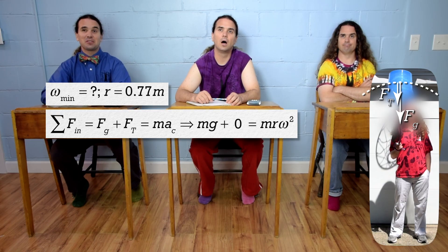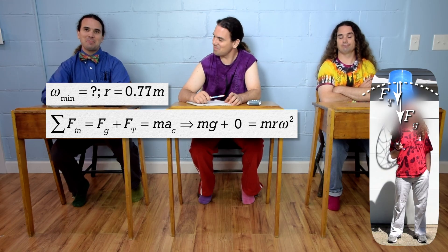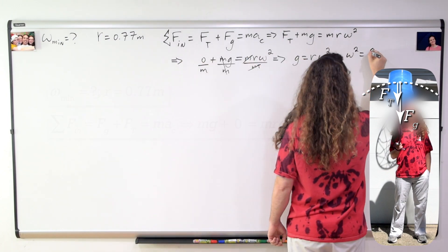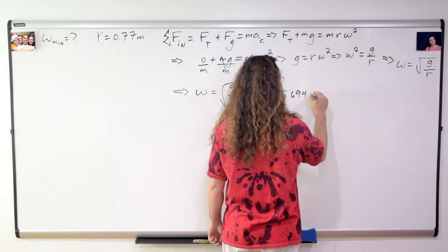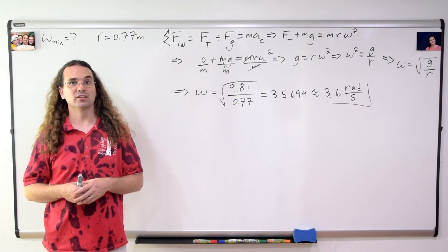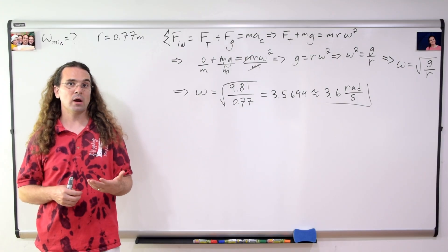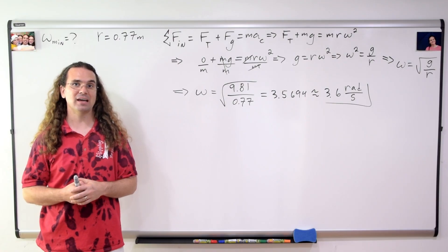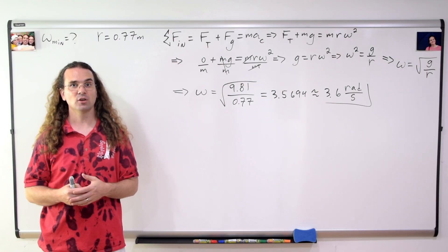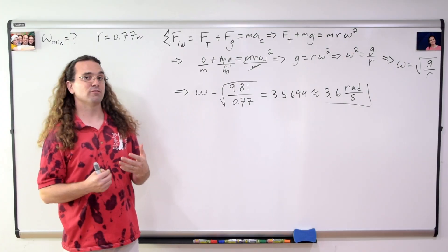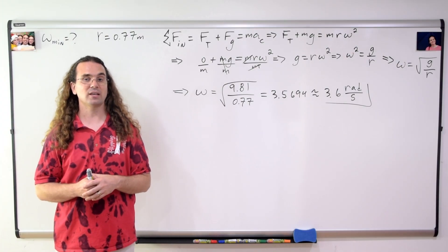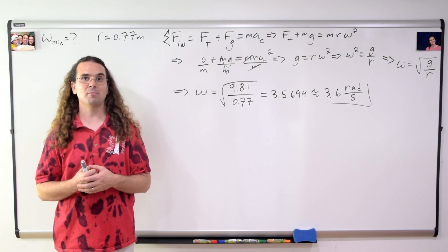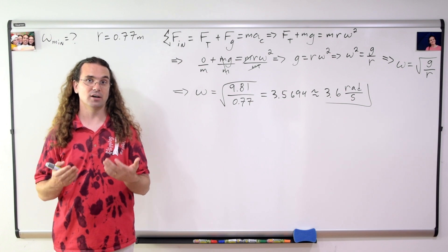Then we just plug in zero for the force of tension, and mass cancels out. We can solve for the angular velocity. It equals the square root of the acceleration due to gravity divided by radius, or the square root of 9.81 divided by 0.77, which equals 3.5694, or 3.6 radians per second with two significant digits. That is the minimum angular speed we can spin the bucket at and have water not flow out of the bucket.